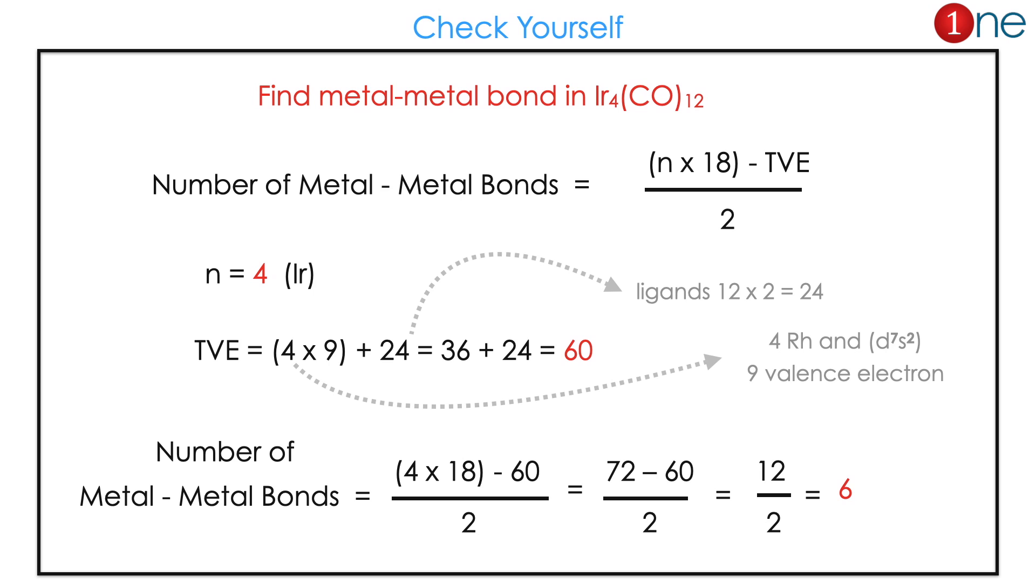So if you substitute in the formula: 4 multiplied by 18 minus 60, divided by 2, which is 72 minus 60, divided by 2, which equals 6. So the total metal-metal bonds is 6. It is that easy.